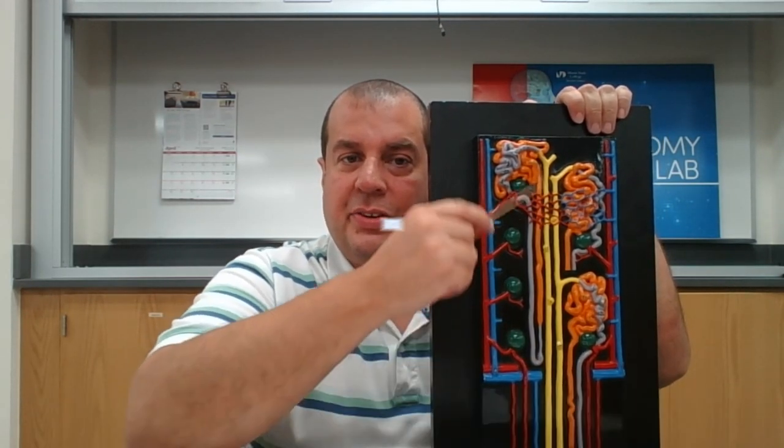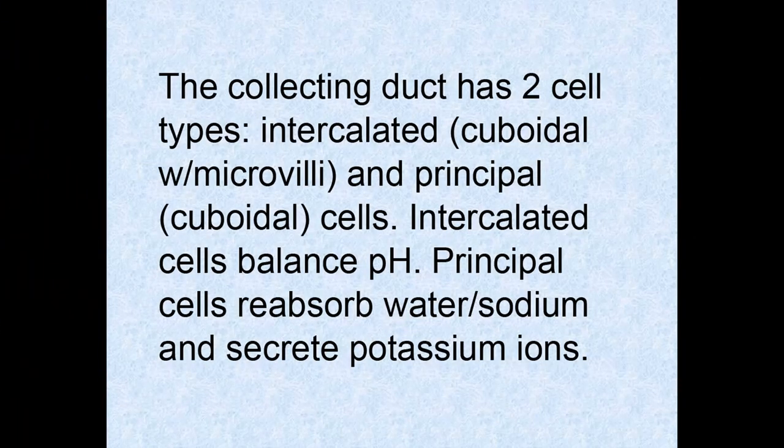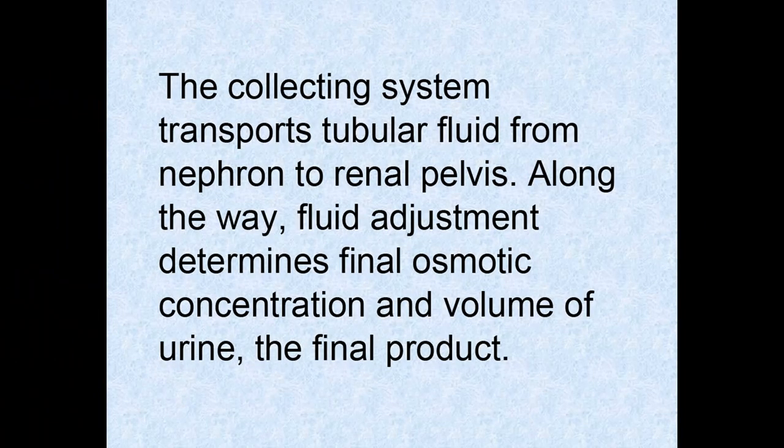Two main types of cells are found in the collecting duct: intercalated cells and principal cells. Intercalated cells are cuboidal cells with microvilli that regulate the acid-base balance in the blood. Principal cells are cuboidal cells that lack microvilli; they reabsorb water and sodium and secrete potassium ions. The collecting system transports tubular fluid from the nephrons to the renal pelvis and along the way the collecting duct adjusts the fluid's composition, determining the final osmotic concentration and volume of urine.